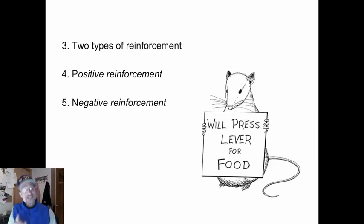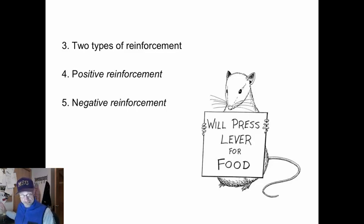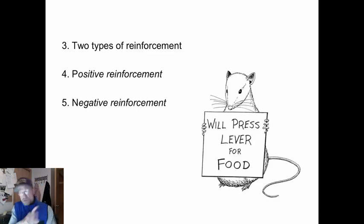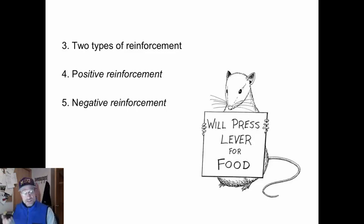Negative reinforcement — this is often confused with punishment — is the removal of an annoying or painful condition when that removal is attached to a behavior. For instance, if there was a mild shock, it would be rewarding to remove the mild shock. If a child had to stay inside at recess, the reward would be allowing the child to go outside. So negative reinforcement is when a behavior is reinforced by taking away something unpleasant.